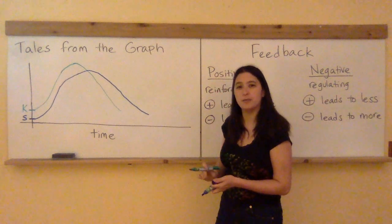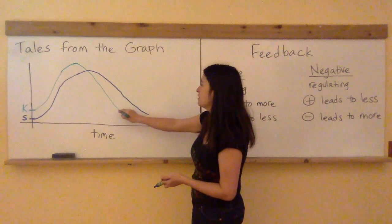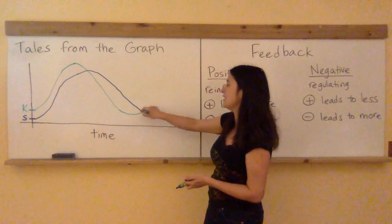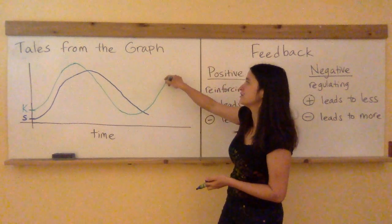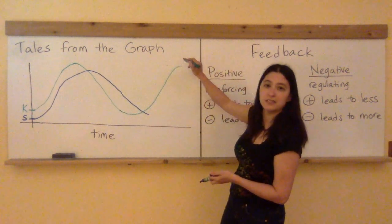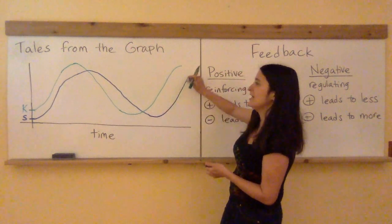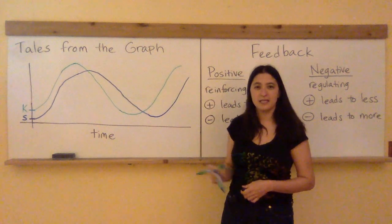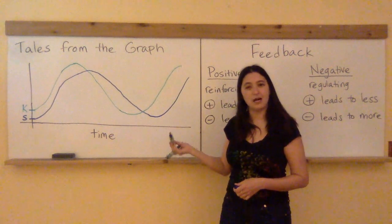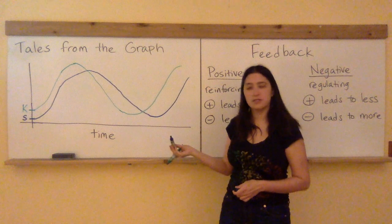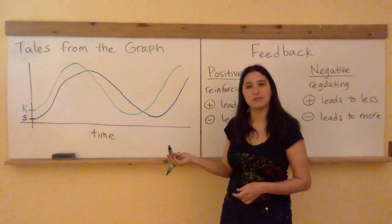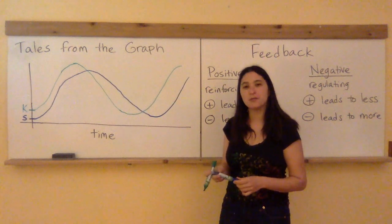And then of course once you've got your snail population finally under control your kale is going to have a lot more freedom, less predators around. And so your kale is going to rebound and once your kale rebounds snail is going to call up all of its buddies and snails are going to come back. And that's how you end up getting this oscillating type of graph which is so ubiquitously observed in many predator-prey systems.